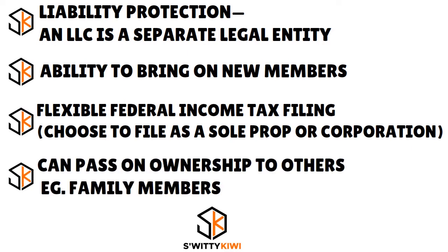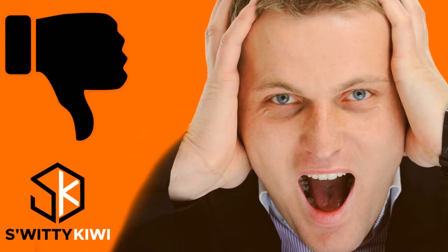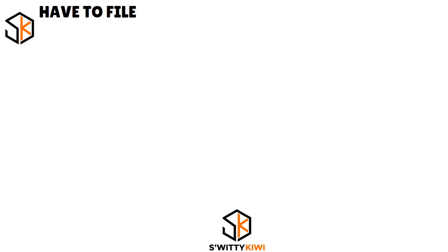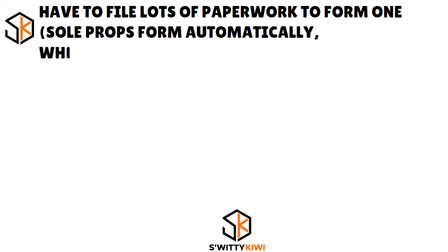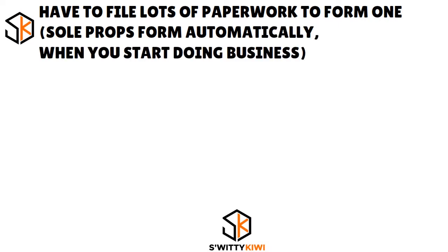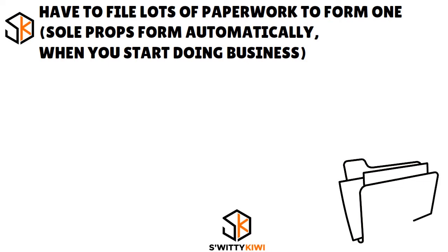You can pass on ownership to others — for example, family members or friends. Here are the cons of a single member LLC: you have to file lots of paperwork — sole proprietorships form automatically when you start doing business, but with an LLC, depending on the state you're in, you might have to have a registered agent service, file articles of organization, and write operating agreements that you submit to your state department.